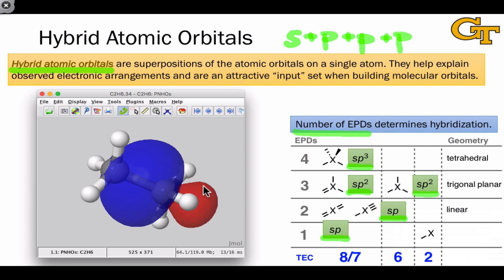Let's look now at the shapes of the hybrid orbitals in ethane. Because each of the carbons in ethane bears four electron pair domains, three CH bonds and one CC bond, we can identify the hybridization of each carbon as sp3, and the shape of a typical sp3 hybrid is shown for you here.